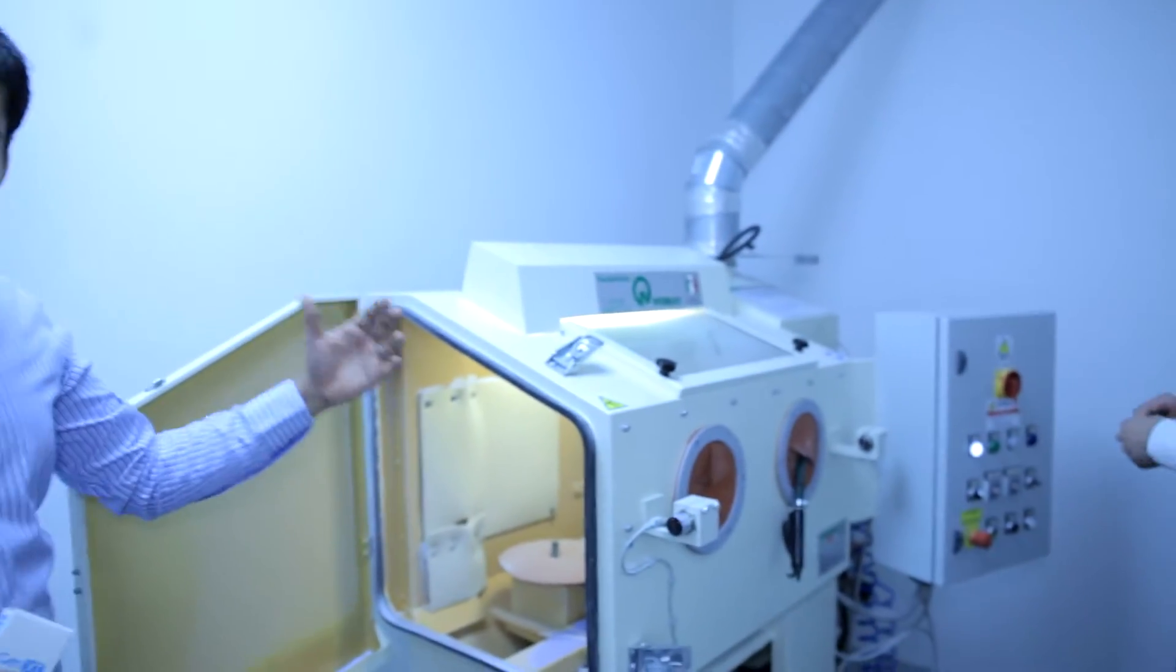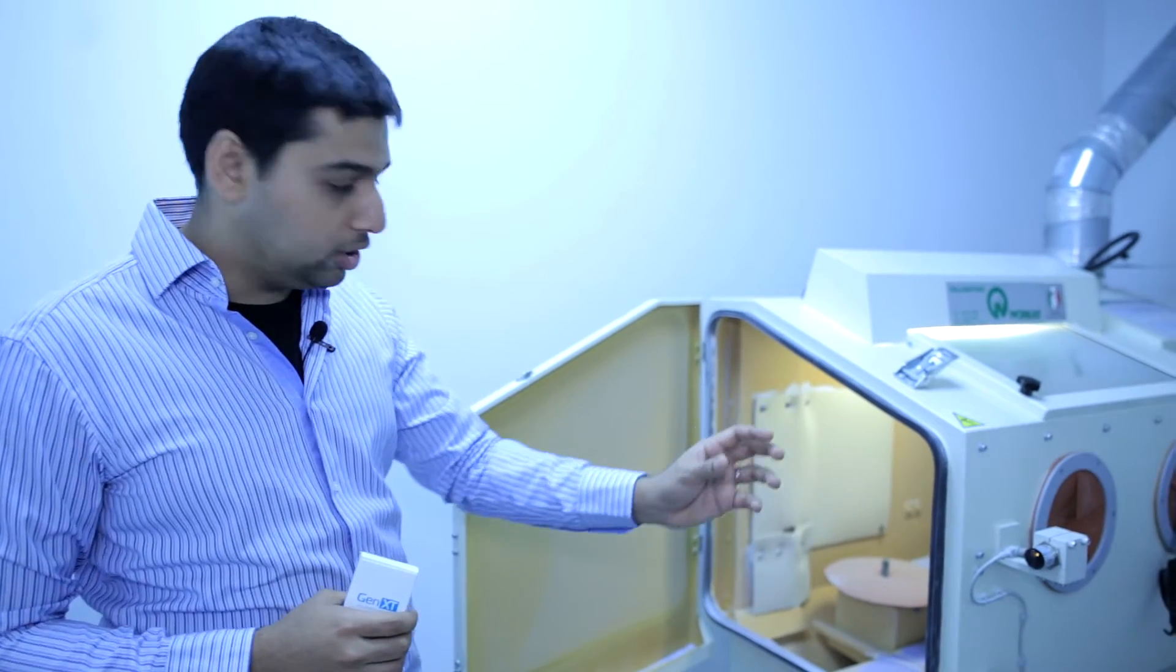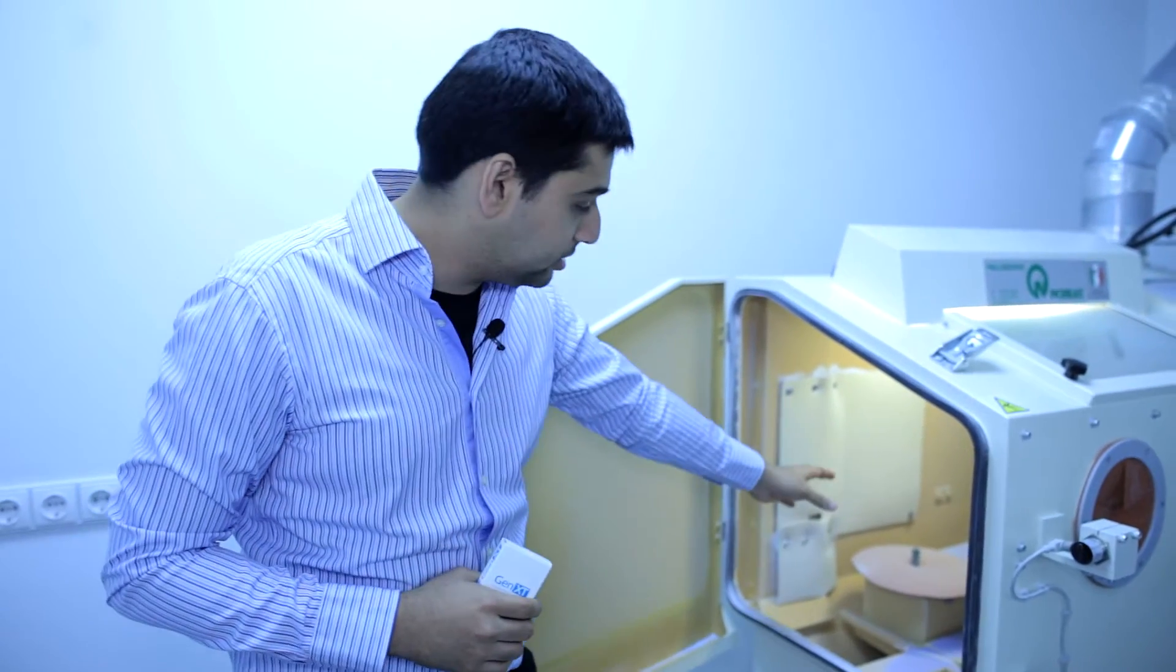So this is an automated sandblasting machine. This is the first step where the surface treatment will start. Unlike a lot of companies that do it via a hand, this is completely automated. They have a jig into which the implant, a single implant is placed inside.